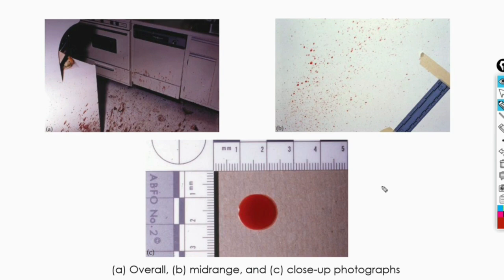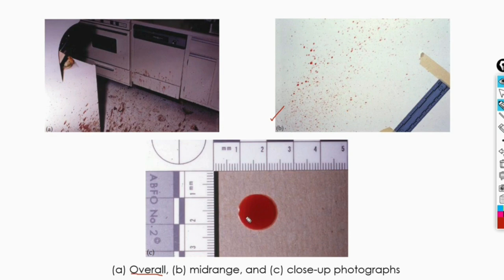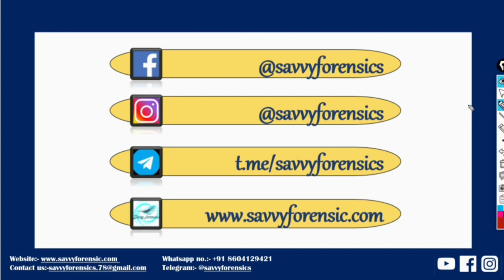In photography, just like every crime scene, we photograph blood stains in three ways: overall photography of the entire crime scene, mid-range shots to relate stains to their immediate environment, and close-up photographs that clearly show the shape and size of each stain. During close-up photography it is very important to include a scale, as it allows us to determine the exact size of a particular stain.